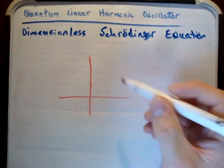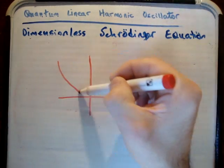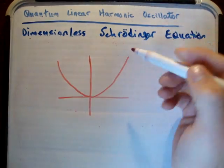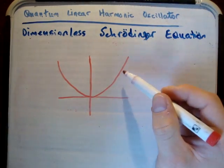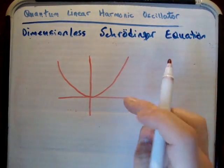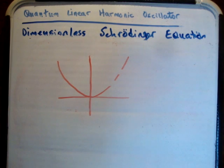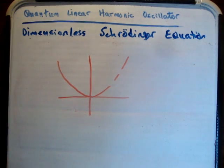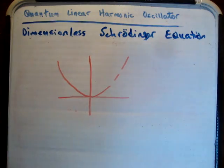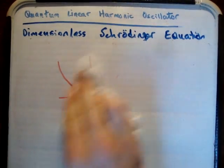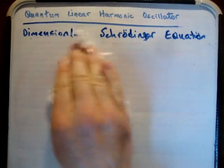If you plot the energies in this system, you're actually going to get a parabola, and the energies are actually continuous — meaning there are no jumps. It's perfectly continuous and every energy is allowed. However, in the quantum treatment, we'll find that that is not the case, and that every energy is not allowed.